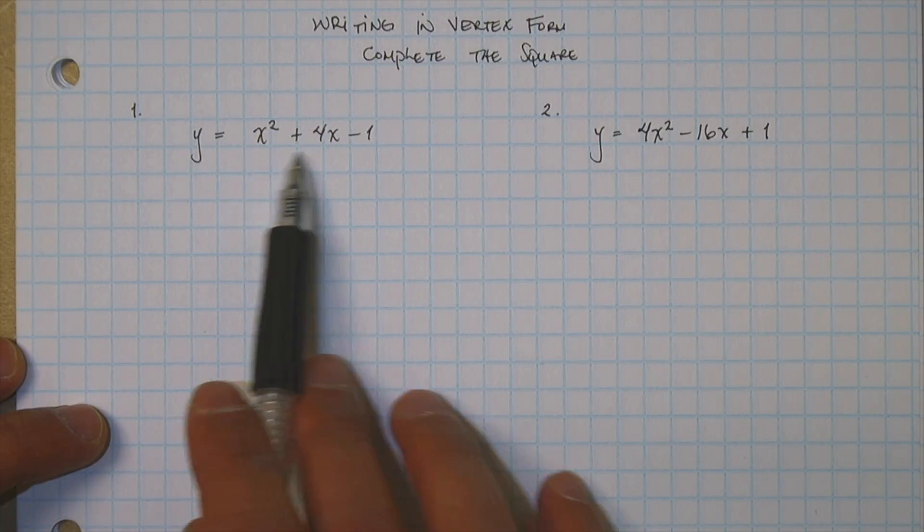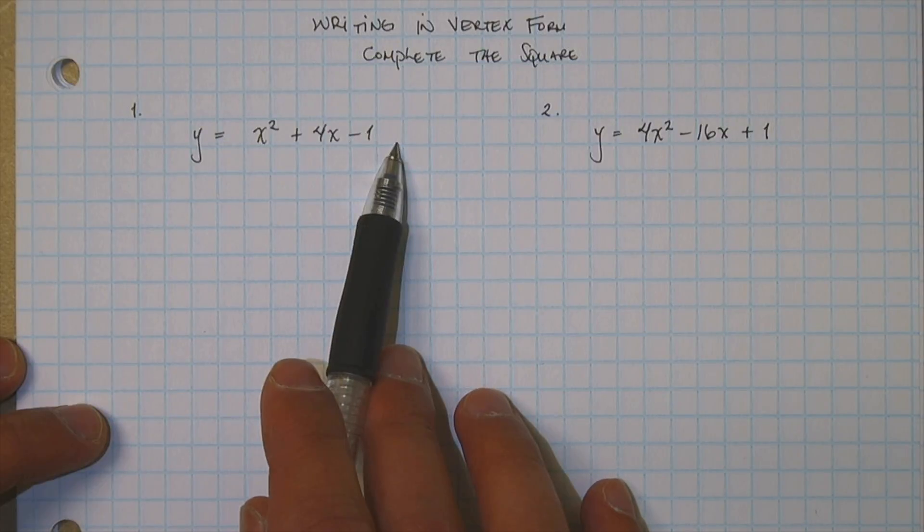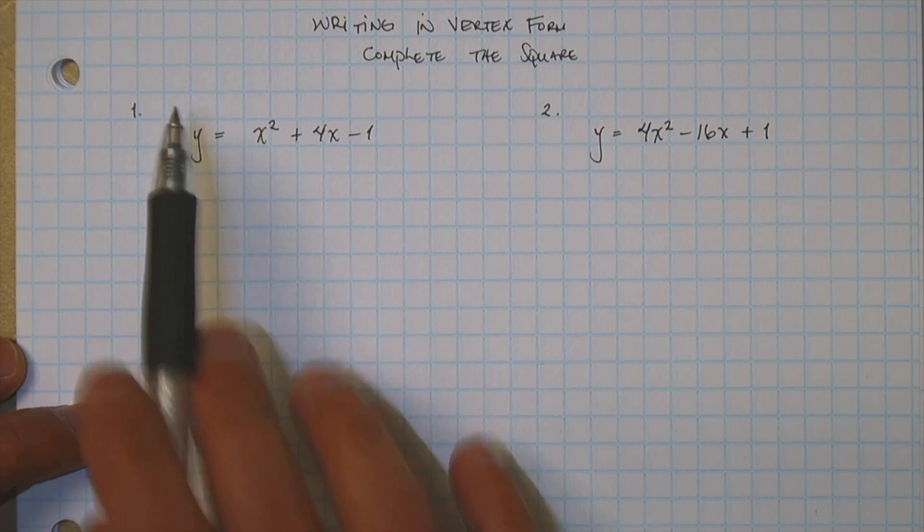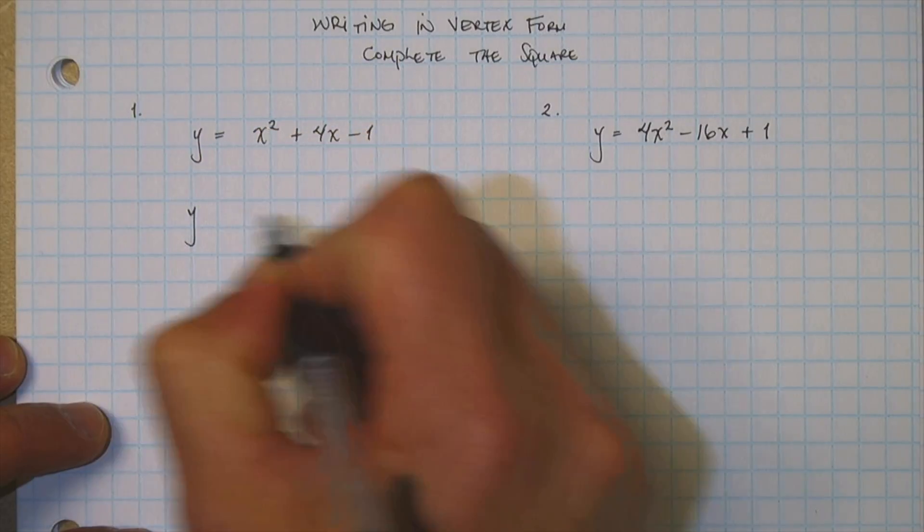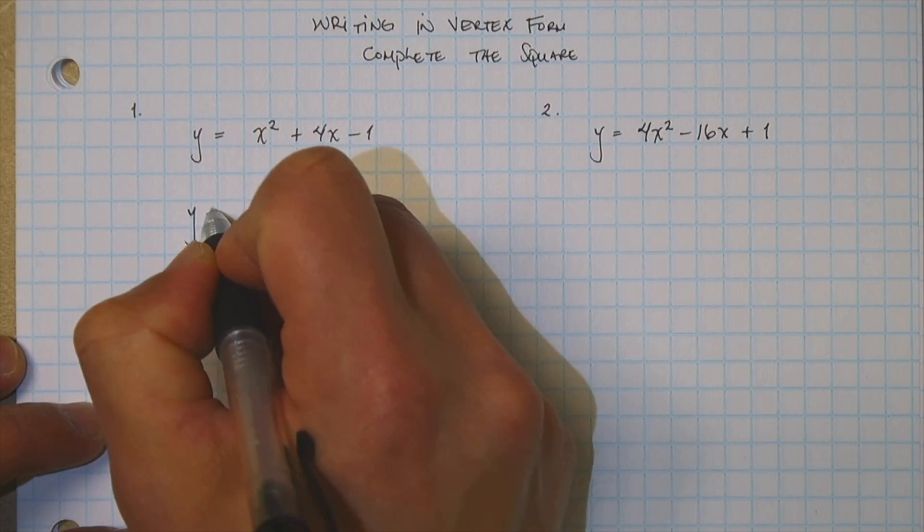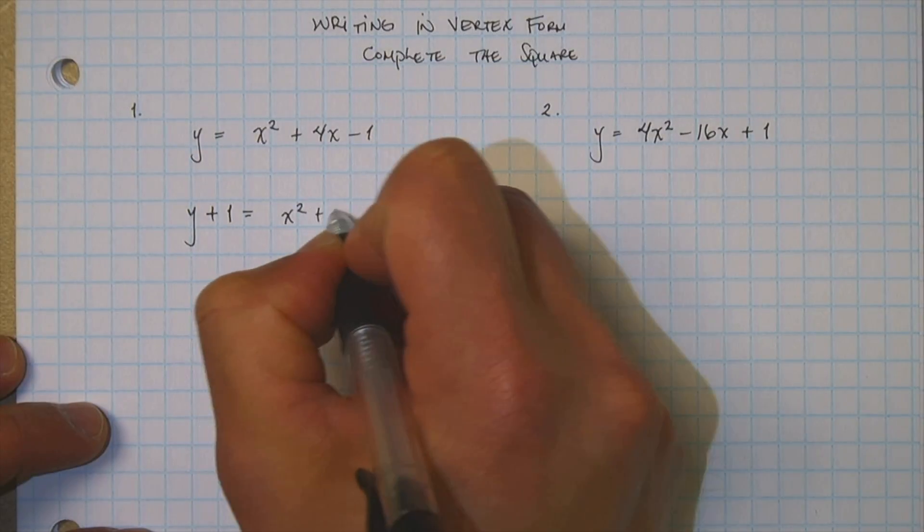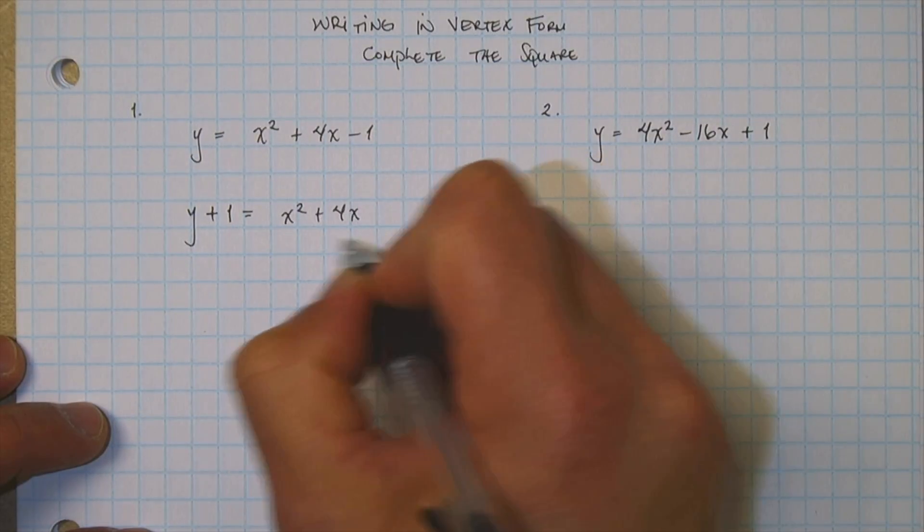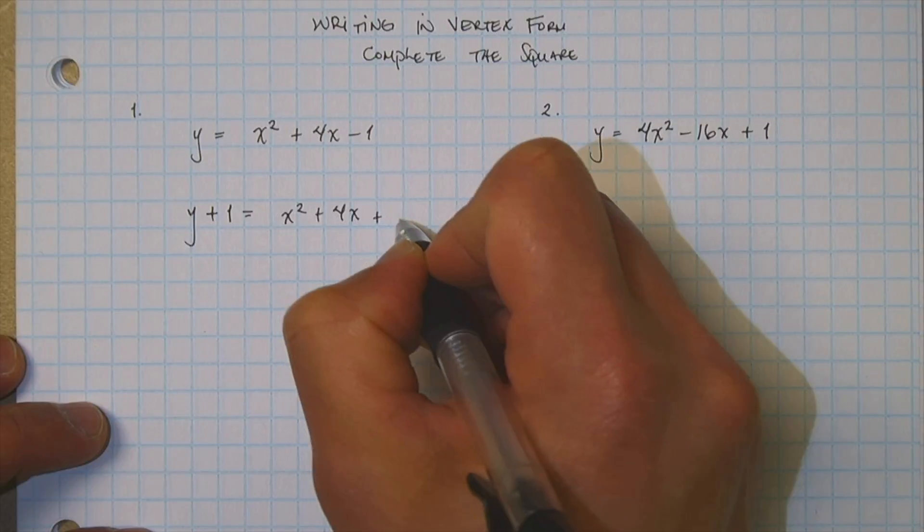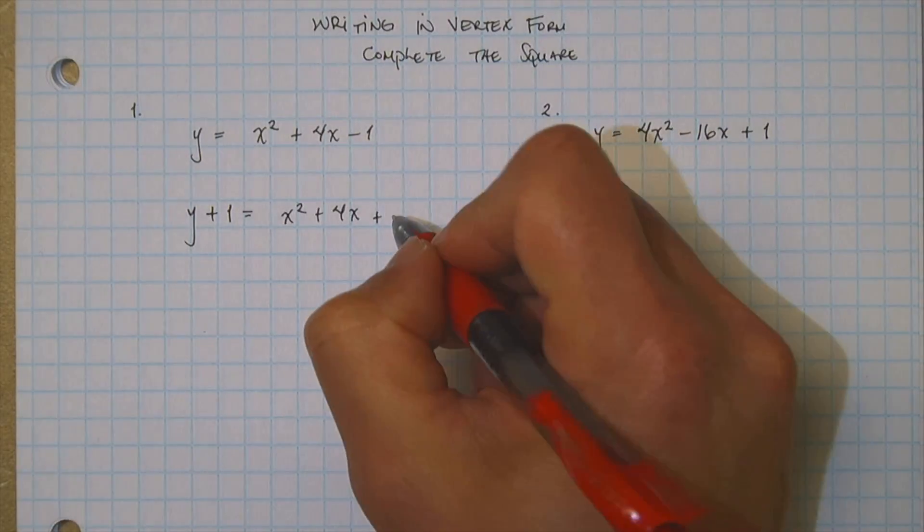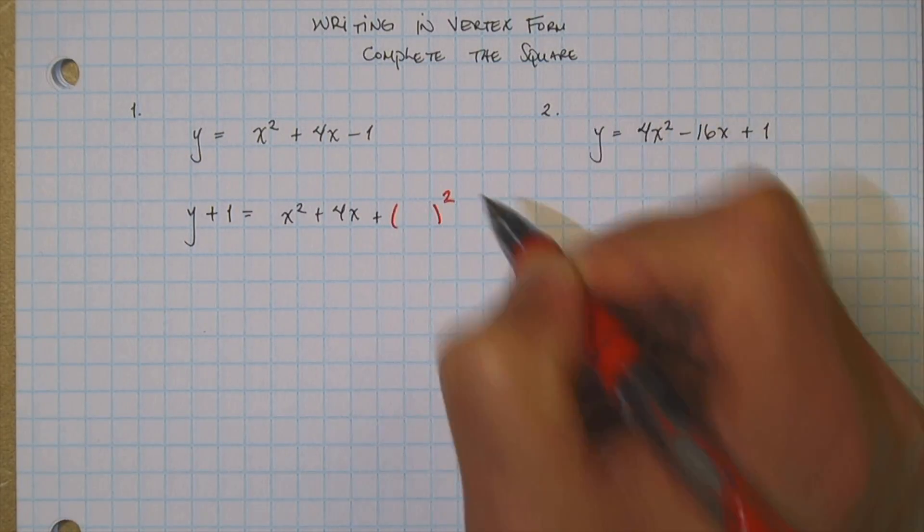So what we want to do is we want to move this guy aside. You can either move it to the right or take it to the left. For today I'm just going to go ahead and take it to the left, take this negative one to the left, become the positive one. Well now over here I have x squared plus 4x. Well now I'm going to go ahead and complete the square. I'm going to give myself some room here, and I'm going to square that.